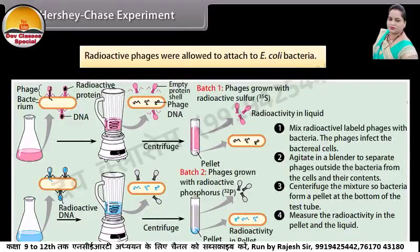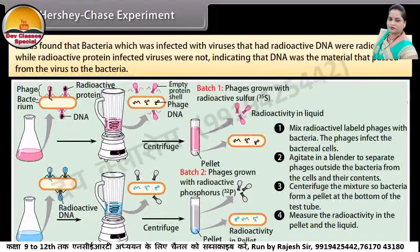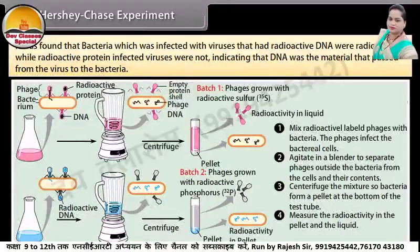Radioactive phages were allowed to attach to E. coli bacteria. It was found that bacteria infected with viruses that had radioactive DNA were radioactive, while bacteria infected with radioactive protein-containing viruses were not, indicating that DNA was the material that passed from the virus to the bacteria.